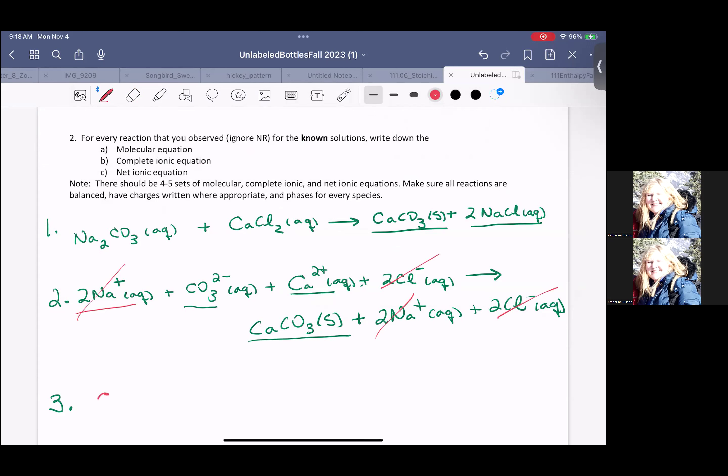So my net ionic is going to be carbonate aqueous plus calcium aqueous goes into calcium carbonate as a solid. And that is a net ionic.